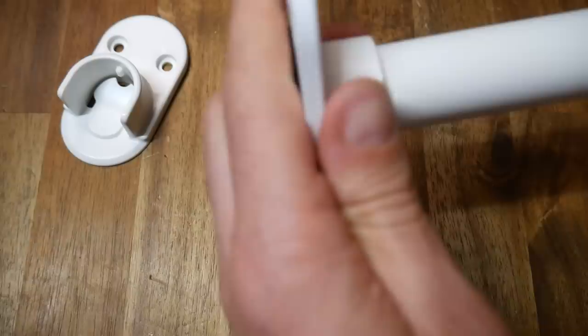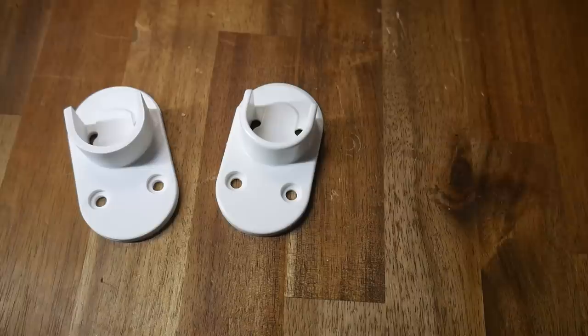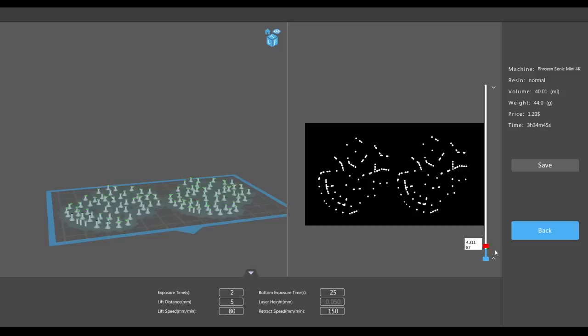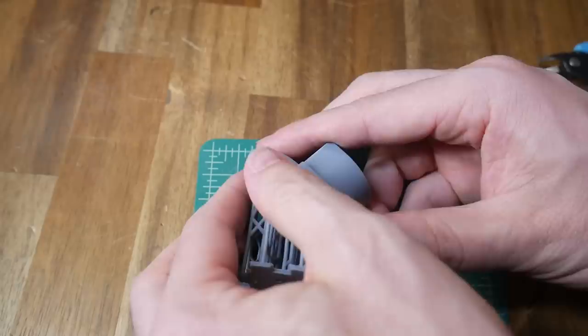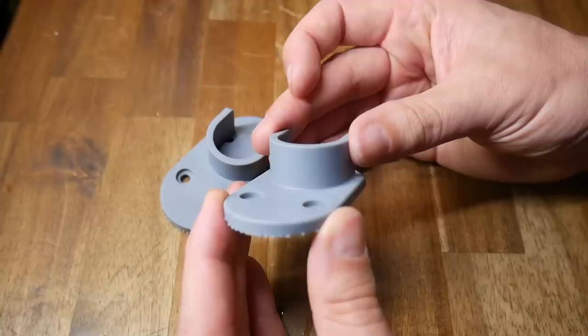That meant going back to the Prusa Mini and printing number two. I also wanted to experiment with printing some of these brackets using a resin printer. The good news being that I could position all of the support on the underside where it wouldn't be seen. I removed the support material after washing but before post curing. This means everything was soft, and it peeled off easily.